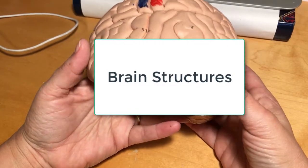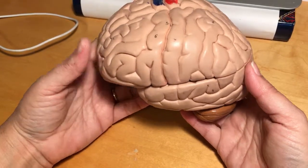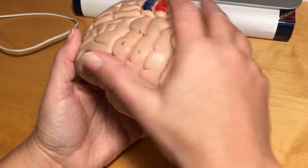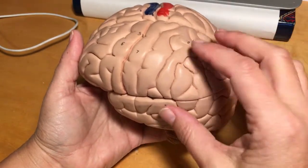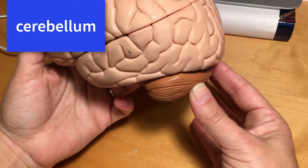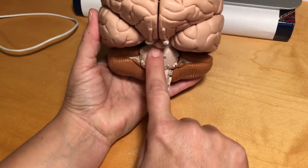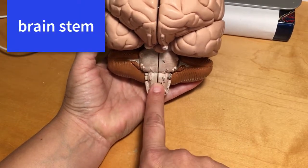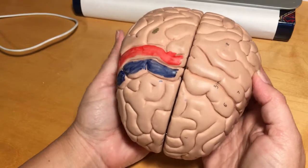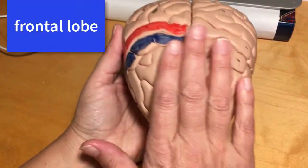Welcome back. Today we're going to be discussing the anatomy of the brain. I'm holding a brain model in my hand. Let's look first at the things on the outside of the brain. The part up here that kind of looks like a brain is actually the cerebrum, and the part in the back on the posterior inferior side is actually the cerebellum. You can also see, if you look at it from the front, this little part hanging down — this is the brainstem. The lobes of the brain are pretty much named after the bones that they sit under, so in the front here this is called the frontal lobe.